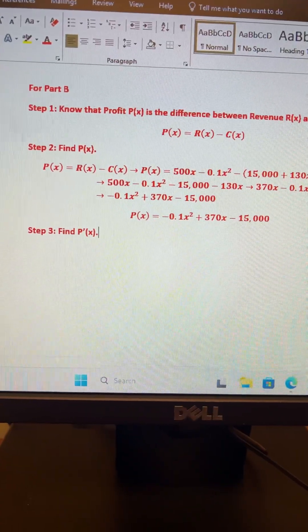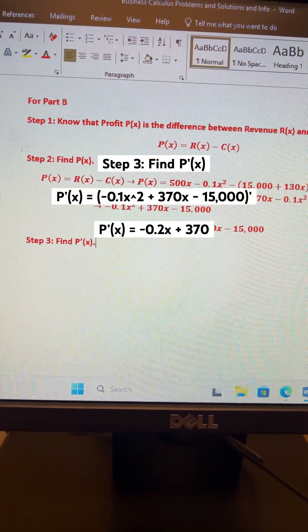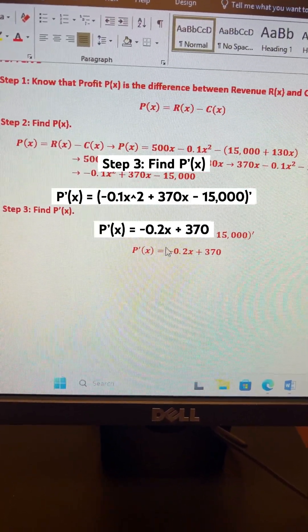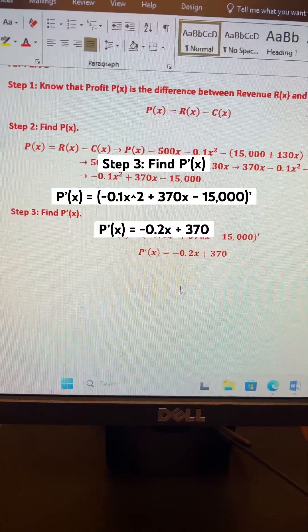Oh shit. Now step 3 is to find the derivative P'(x). Alright, differentiate P(x) to get P'(x) is equal to negative 0.2x plus 370.